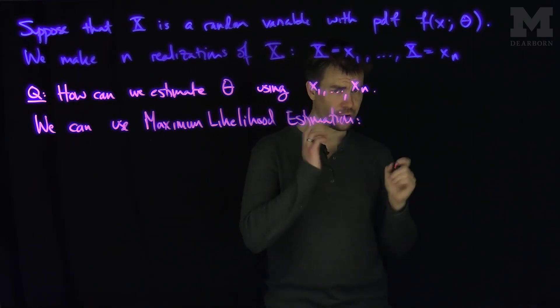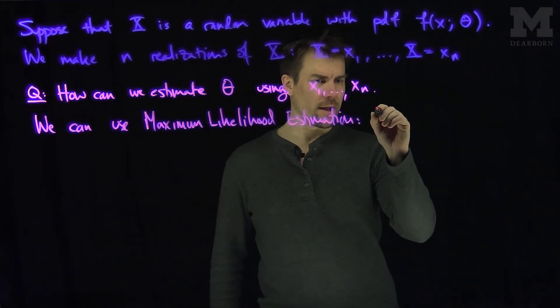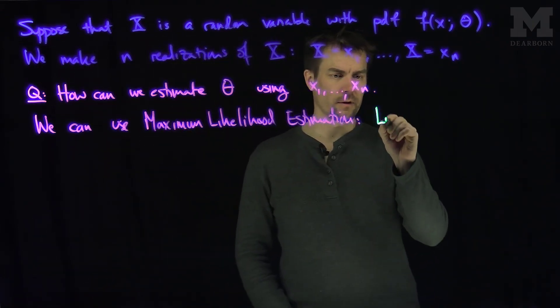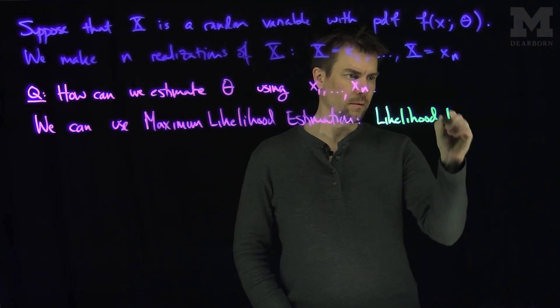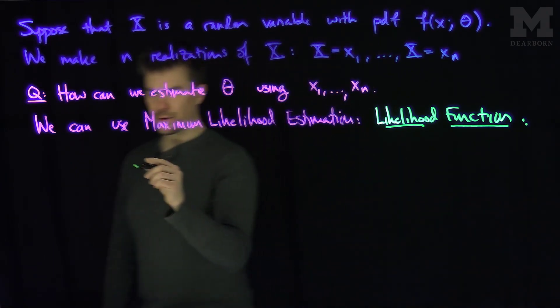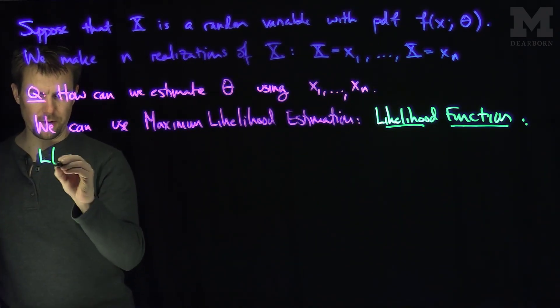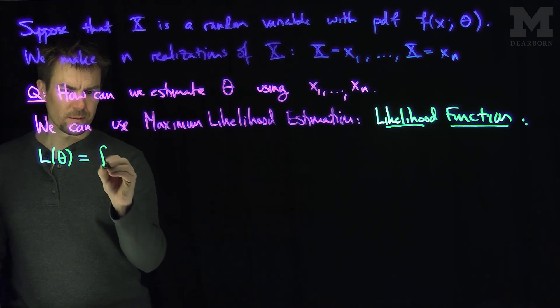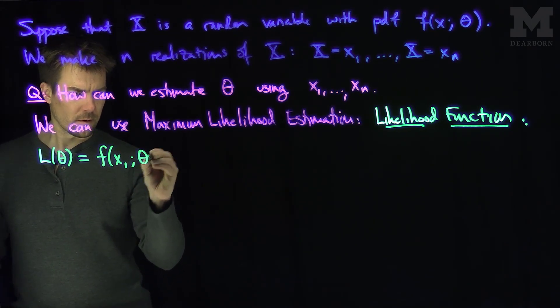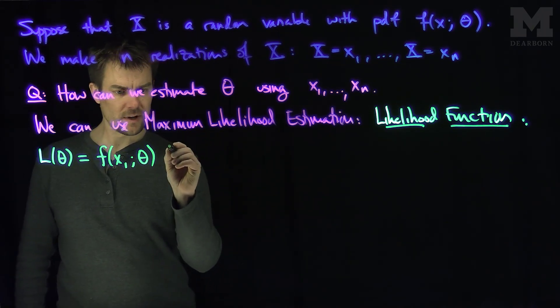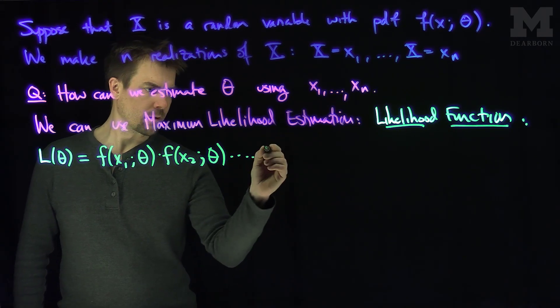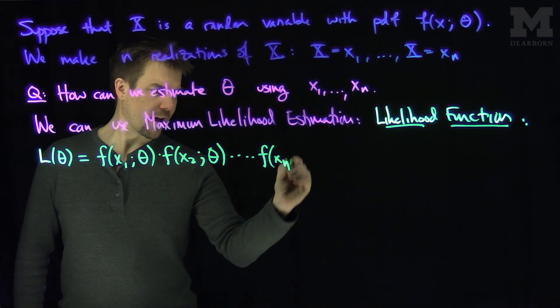What we'll do is consider a likelihood function. Our likelihood function is L(θ), which equals f(x1,θ) times f(x2,θ) times... times f(xn,θ).